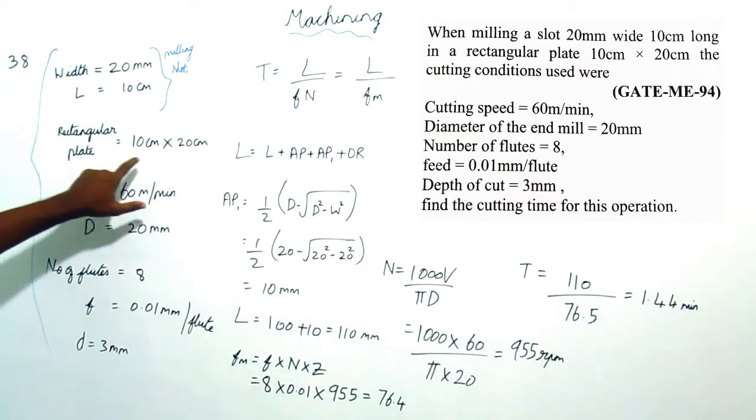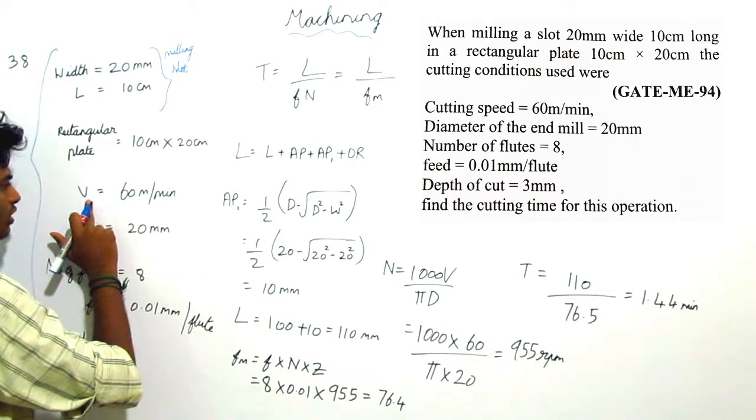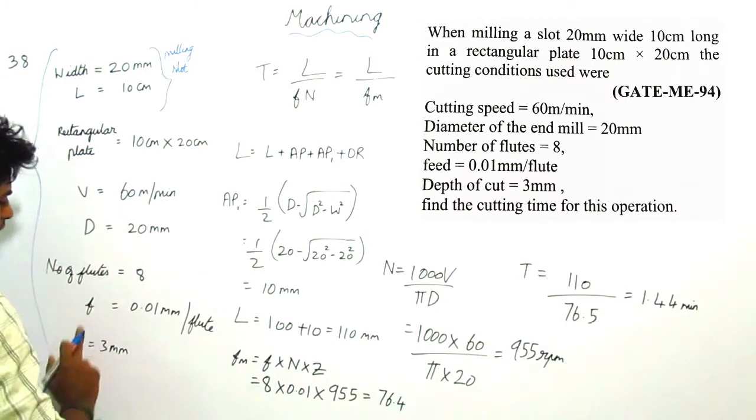This is a rectangular plate of length into width. This is velocity, this is diameter, number of flutes, feed and depth.